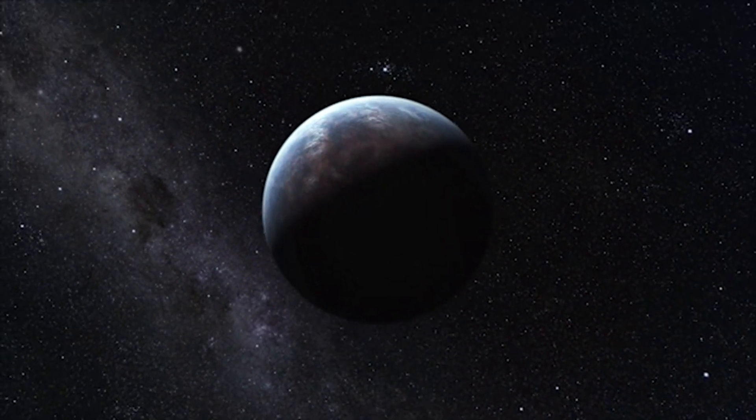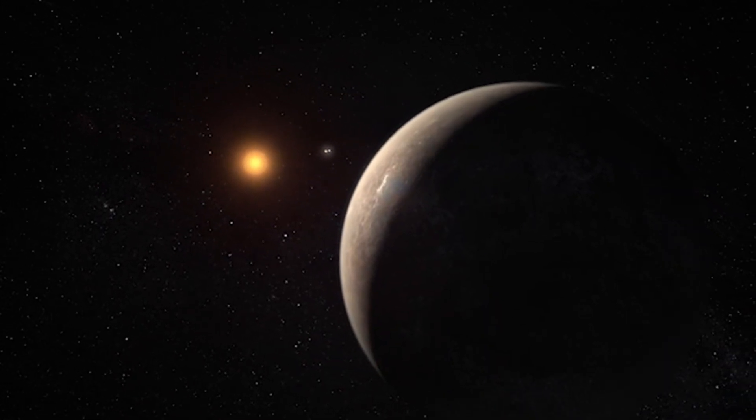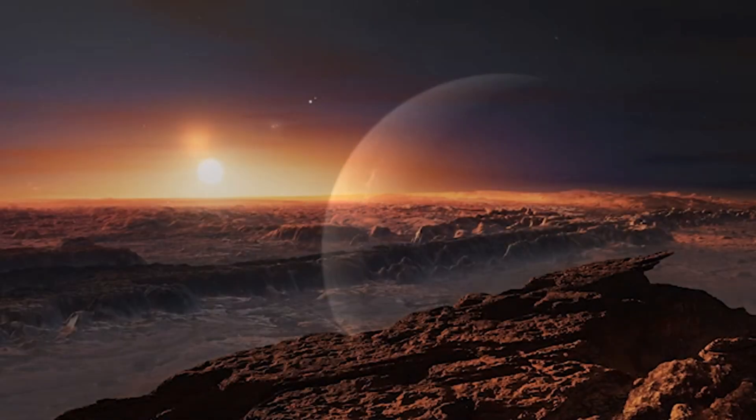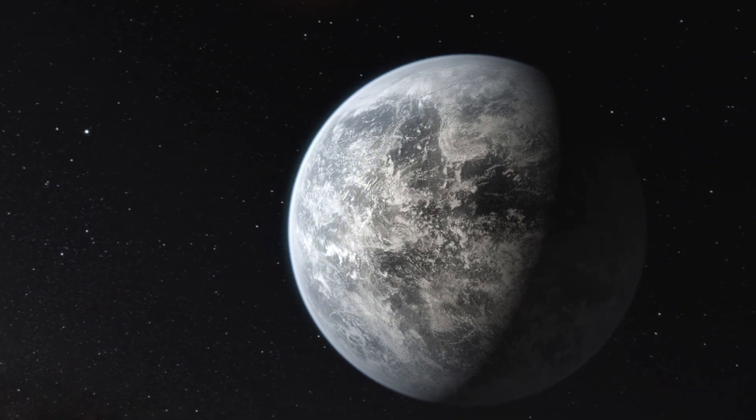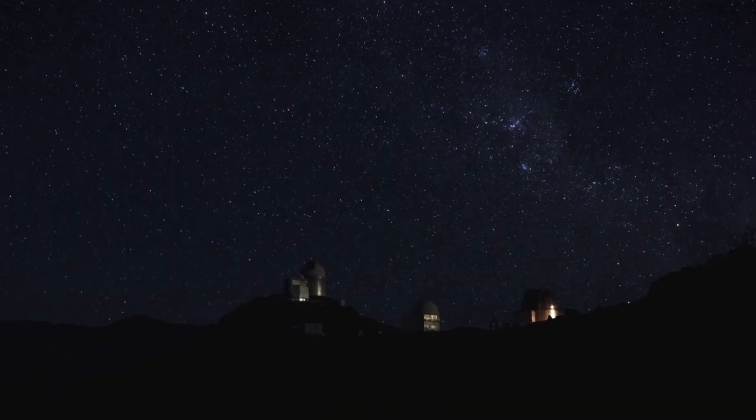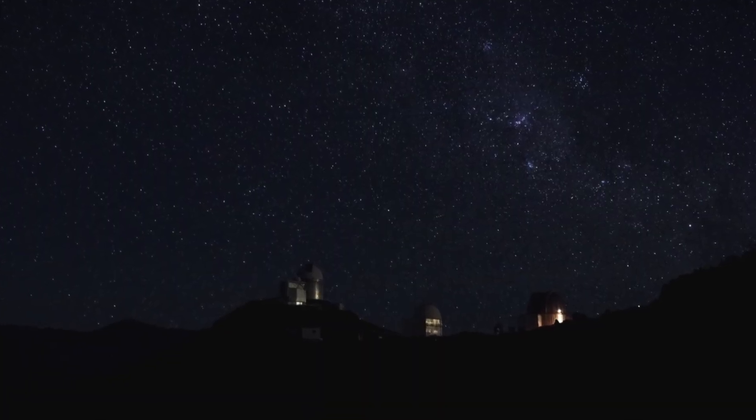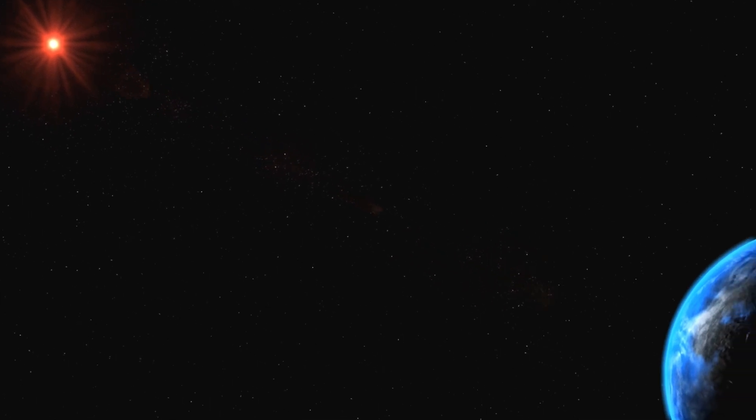Now, if there really is a civilization on Proxima b, one of the first questions we would probably ask is how they have managed to survive in such a hostile environment. Remember, Proxima b is orbiting a red dwarf star. Proxima Centauri, which is notorious for its intense stellar flares.